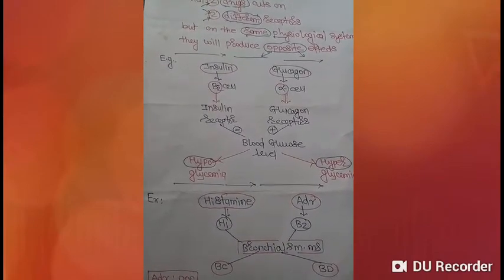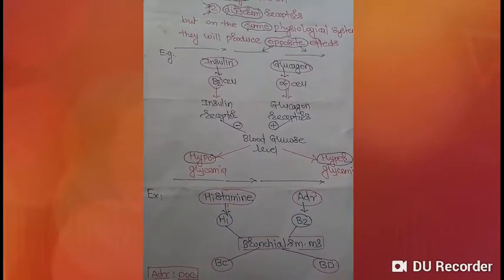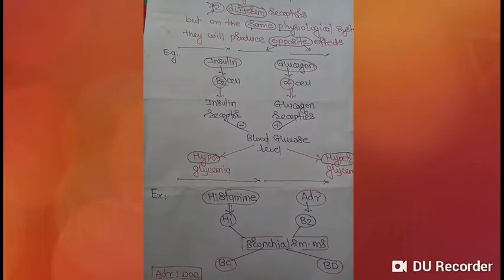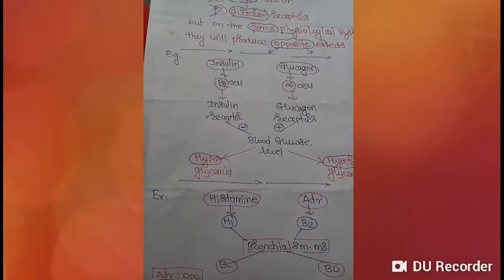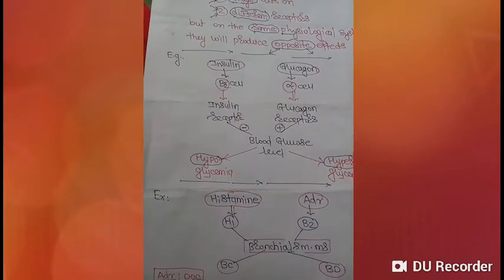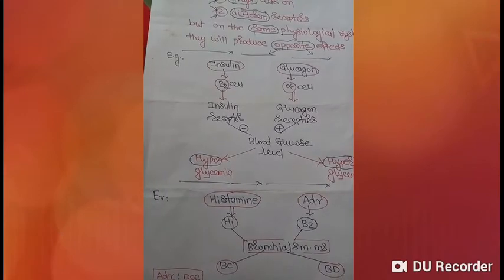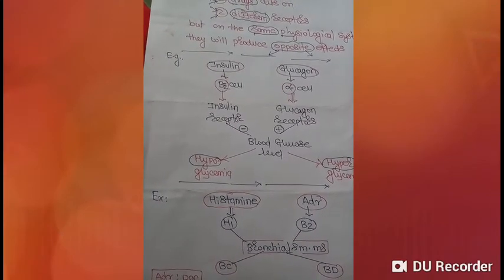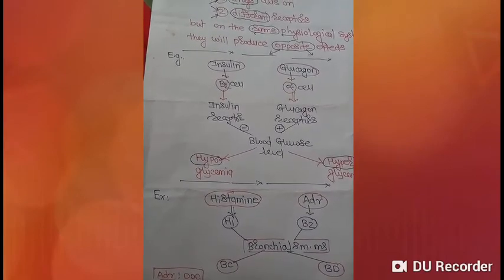That's why adrenaline is the drug of choice in anaphylactic shock. In anaphylactic shock, the causative agent is histamine, which causes bronchoconstriction. We give adrenaline as the drug of choice because it causes bronchodilation by acting on the same physiological system.